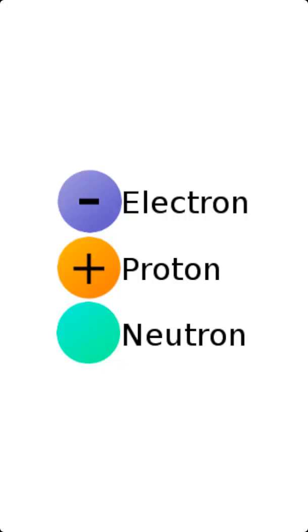Electrons are charged, protons are charged, neutrons are uncharged. Electrons and protons have the exact same charge.